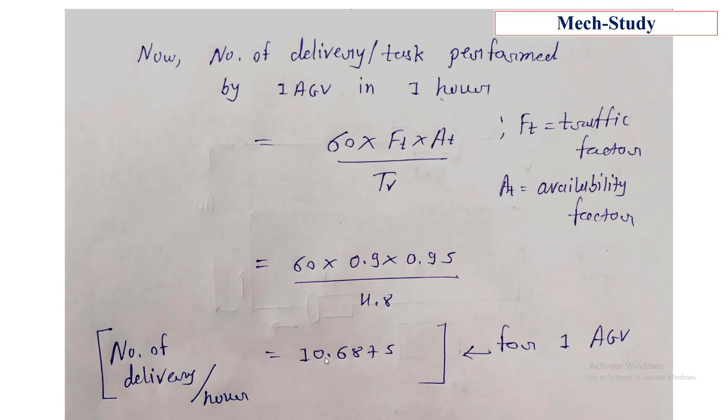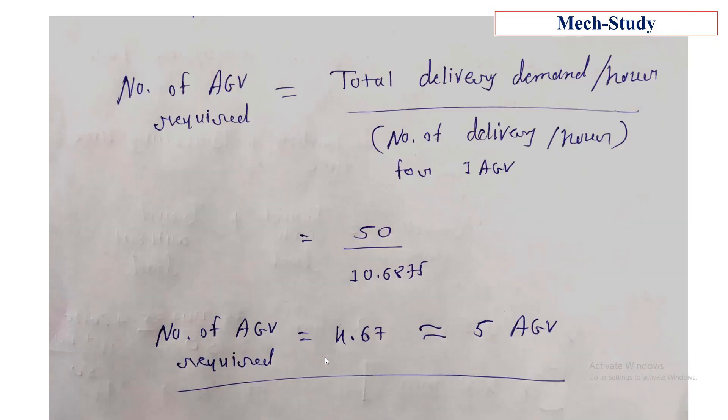Now we have to find the number of AGVs required to perform the required demand. The number of AGVs required equals total delivery demand in one hour divided by the number of deliveries performed by one AGV in one hour.